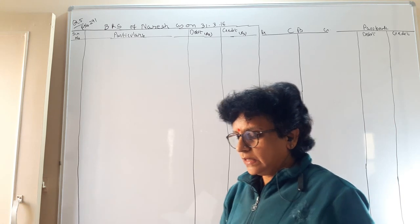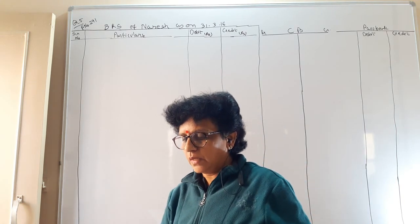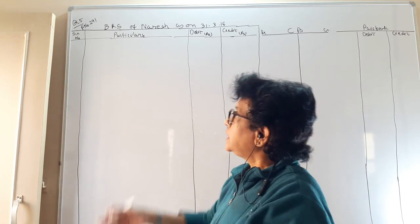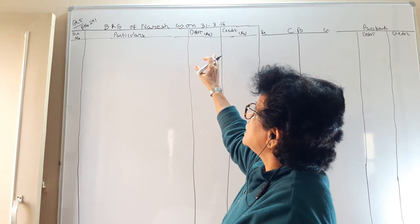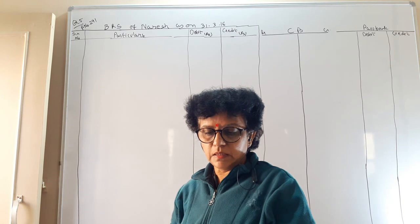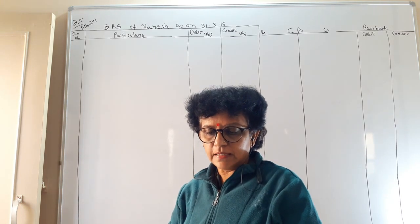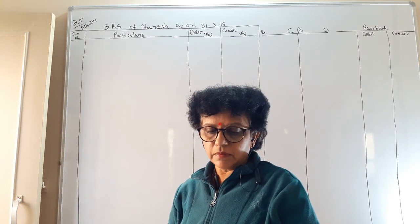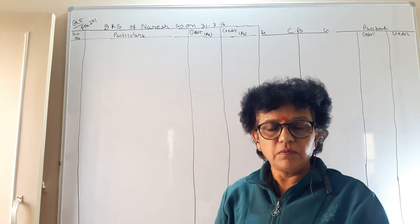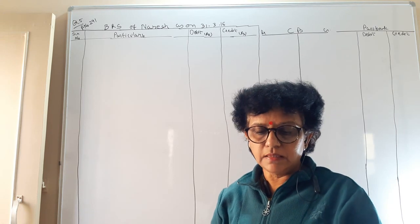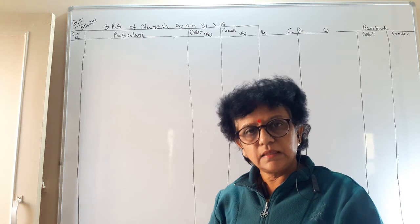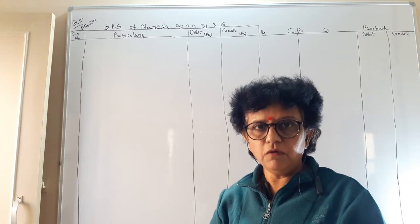The cash book of Nuresh shows a credit balance of bank 12,000 as on 31st March 2016. We have to prepare the bank reconciliation statement of Nuresh as on 31st March 2016. It is given as a cash book credit balance. Normally the cash book has a debit balance, but here it is a credit balance, so we have to start as the bank overdraft of the cash book.